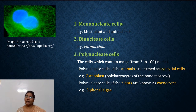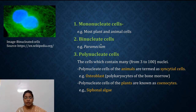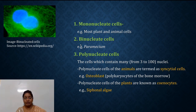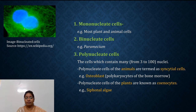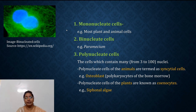The second type is binucleated cells. As the name suggests, cells which contain two nuclei are called binucleated cells. The well-known example of binucleated cells is Paramecium. The third type of cell is polynucleated cells — poly means many, so cells which contain many nuclei, ranging from three to a hundred nuclei.